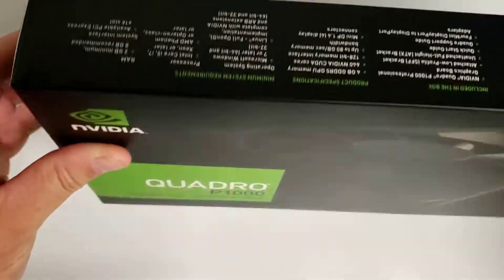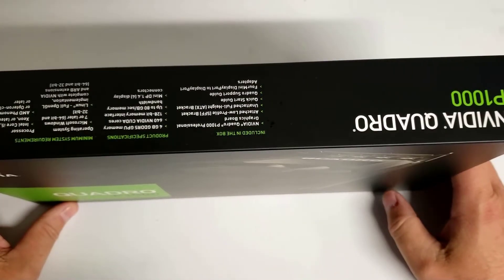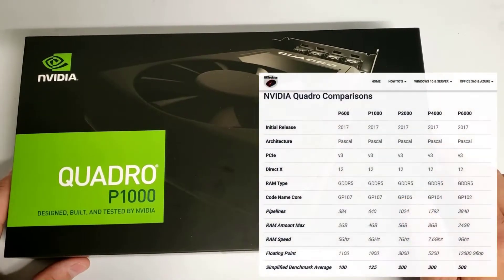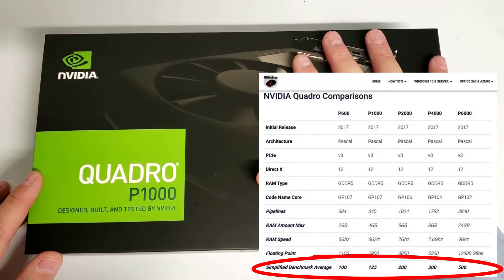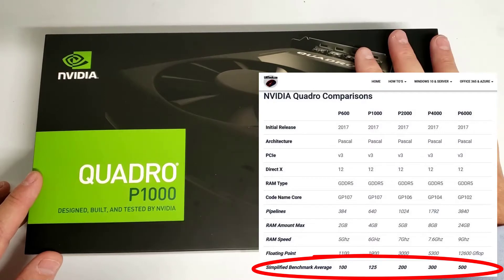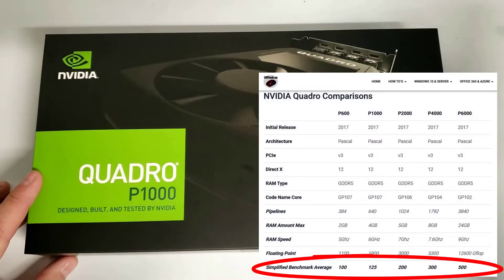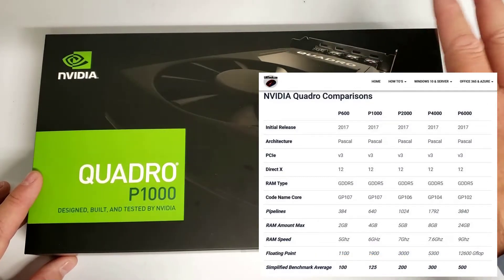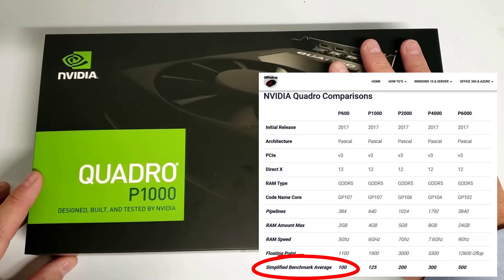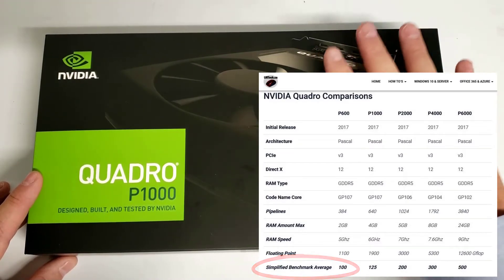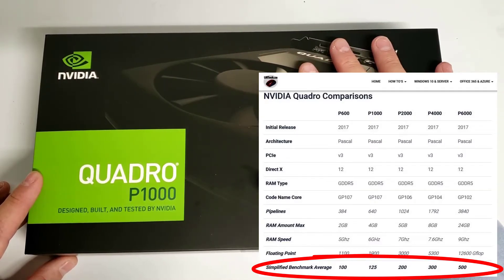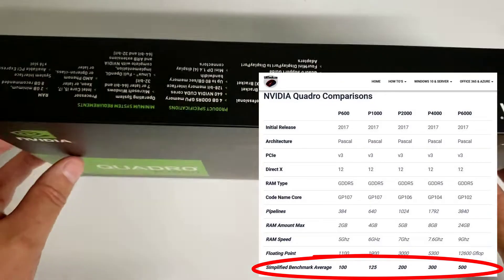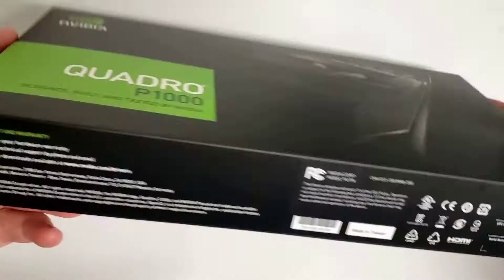All of that comes down to benchmarks. I've synthesized a lot of benchmarks into a simplified standard — please don't write messages saying it's different for your use case. Using the P600 as 100, the P1000 comes out at about 125, the P2000 at about 200, and the P4000 is about three times as good. I'll put this up on a chart.